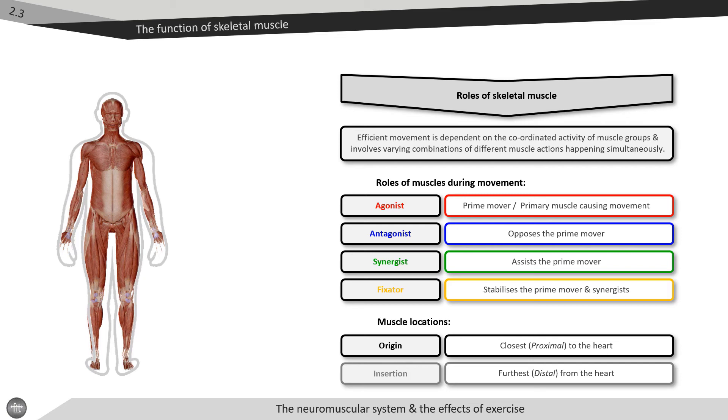We can use the biceps brachii as an example. The origin of the biceps brachii is the proximal attachment point which is the anterior surface of the scapula. The insertion of the biceps brachii which does the movement is the distal attachment point and this would be the radius.